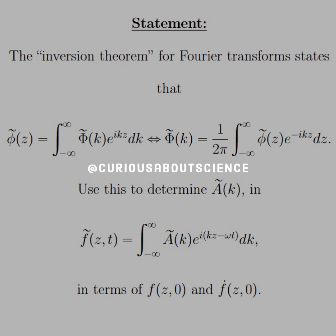The inversion theorem, or the inverse Fourier transform, states that phi-tilde of z is equal to the integral from negative infinity to infinity of capital Phi-tilde of k, e to the positive ikz dk. We can invert that, and the normalization goes to 1 over 2π, giving phi(z) as a function of z-tilde times e to the negative ikz dz. Use this to determine a-tilde of k, and f(z,t)-tilde equals the integral from negative to positive infinity of a-tilde(k) e to the ikz minus ωt dk in terms of f₀ and f-dot(z,0). Lots to do — let's run it through.